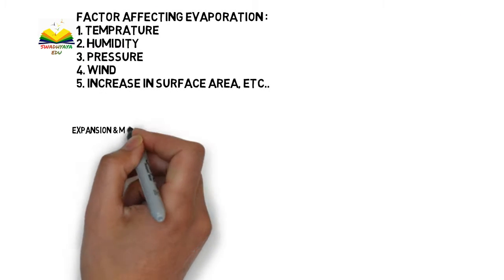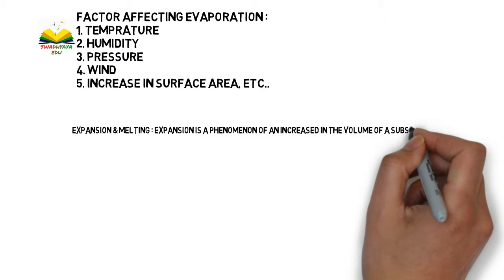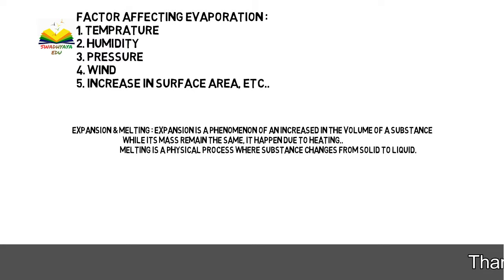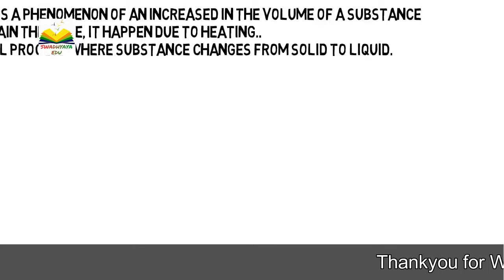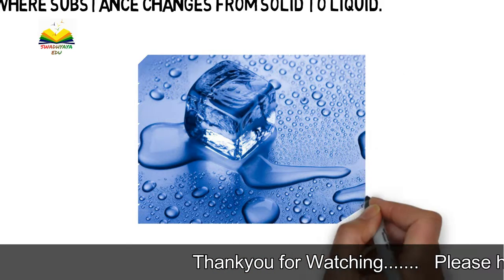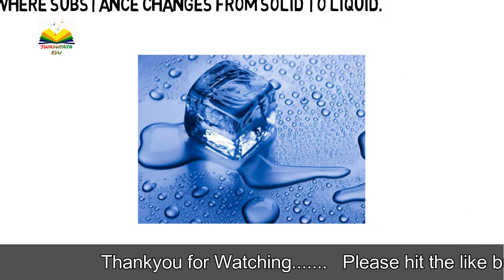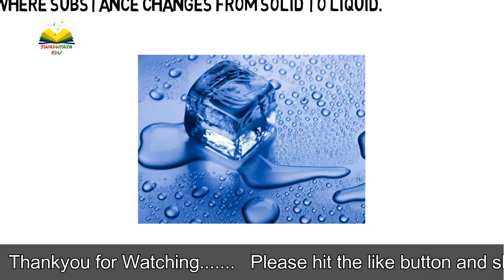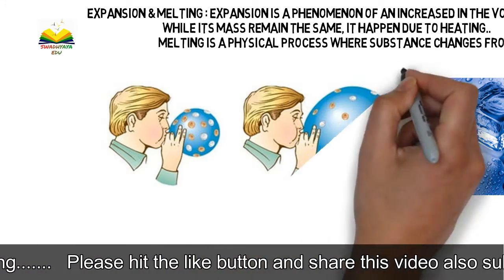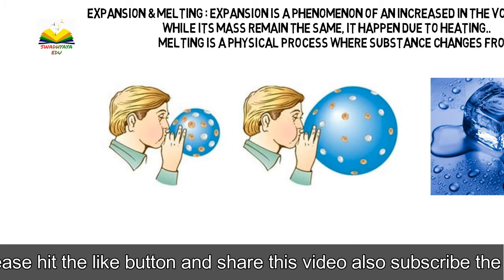Next is expansion and melting. Expansion is a phenomenon of an increase in the volume of a substance while its mass remains the same — it happens due to heating. So the substance expands in volume but its mass stays the same. Melting is when a substance transforms directly from solid to liquid — that is called melting. For example, ice melts, which is melting. For expansion, take a balloon — when heated it expands.